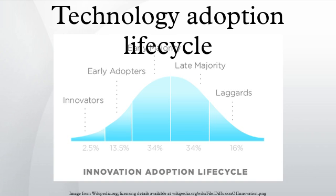One way to model product adoption is to understand that people's behaviors are influenced by their peers and how widespread they think a particular adoption action is. For many format-dependent technologies, people have a non-zero payoff for adopting the same technology as their closest friends or colleagues. If two users both adopt product A, they get a payoff greater than zero. If they both adopt product B, they get a payoff of B greater than zero. But if one adopts A and the other adopts B, they both get a payoff of zero.